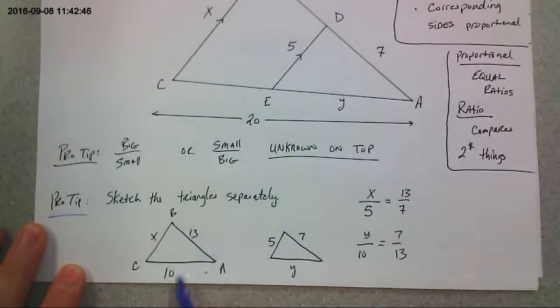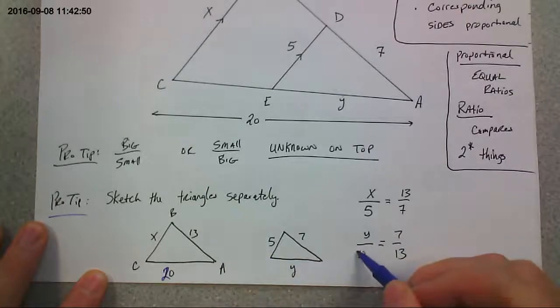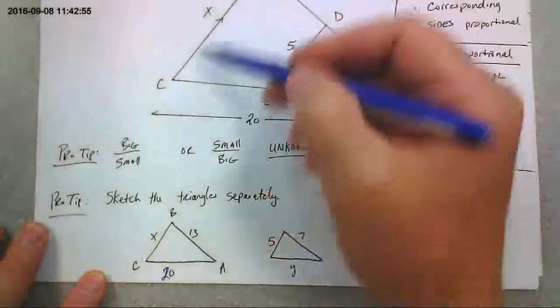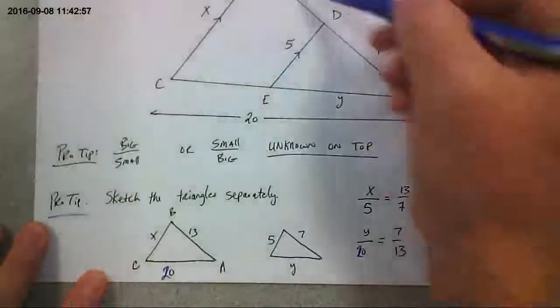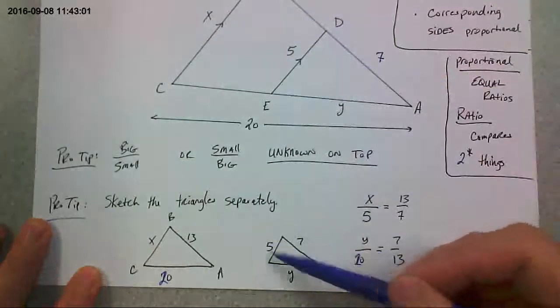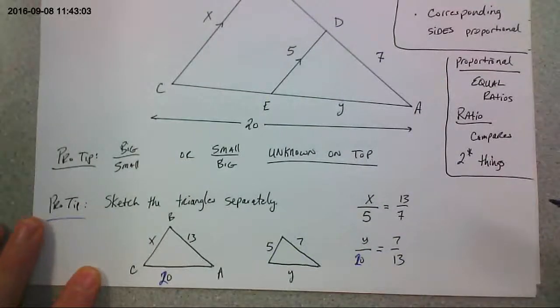So my big triangle, A, B, C see the bottom side? Sorry, I wrote 10. It's 20. Right? From here to here is 20. This side is X. This side is 13. It's 6 and 7. It's 13. Whereas the small triangle right here 7, 5, and Y are the distances. Okay?